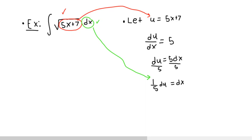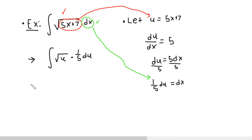Now let's rewrite this. Instead of 5x plus 7, I say u. So it's u times — well, what was dx? dx was 1/5 du. And now, proper notation is to bring the constants to the front of the integral. Then your du is always at the end, and that's really all there is.